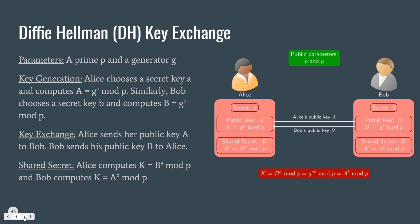In the Diffie-Hellman key exchange algorithm, both parties are given parameters, a prime p and a generator g. In the key generation step, Alice chooses secret key A and computes g to the A mod p, let's say this is capital A. Similarly, Bob chooses the secret key B and computes g to the B mod p, and let's say this is capital B.